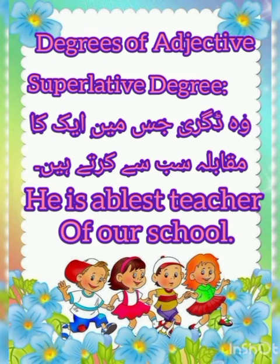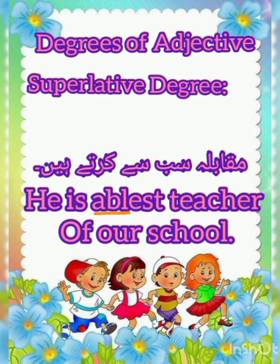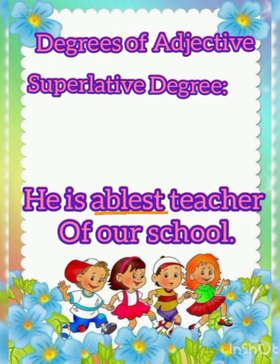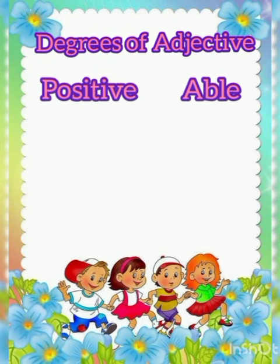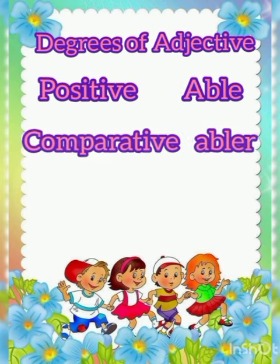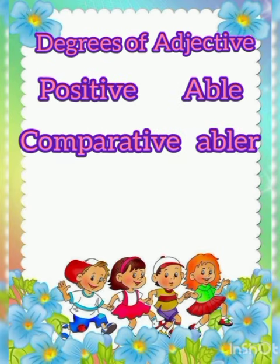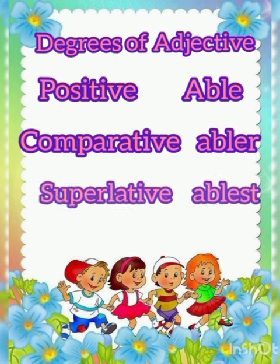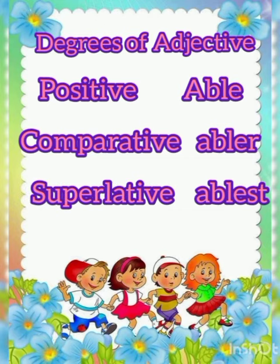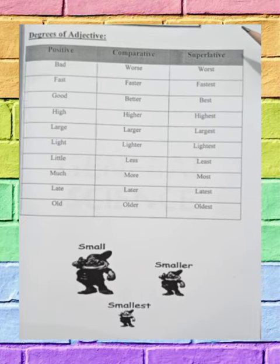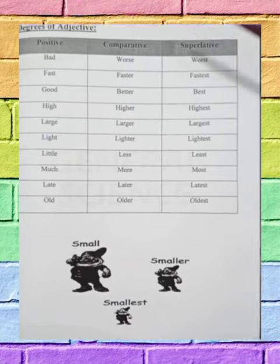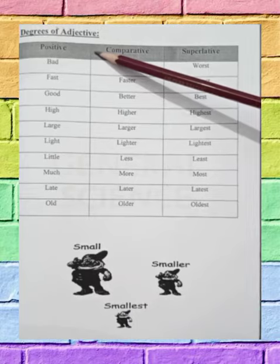Students, we have used ablest here. First of all, the positive form was able, the comparative was abler, and the superlative was ablest. So students, now we have learned the degrees of adjectives.